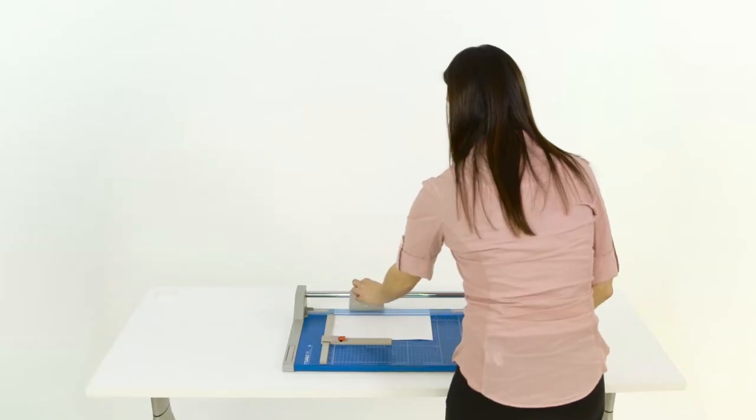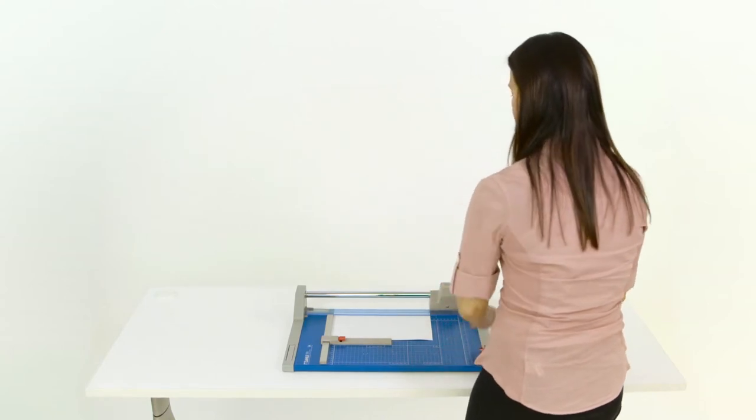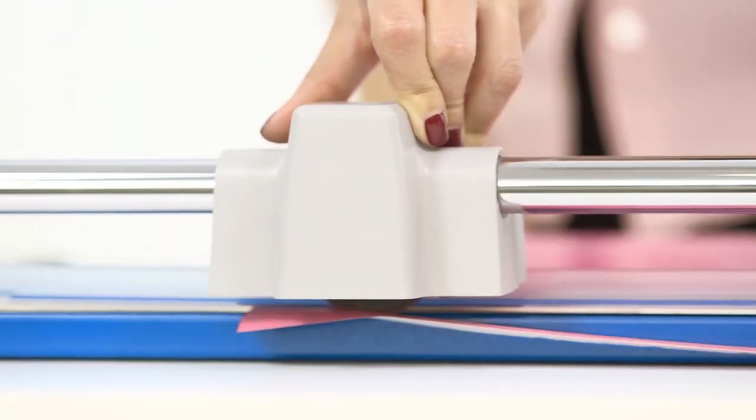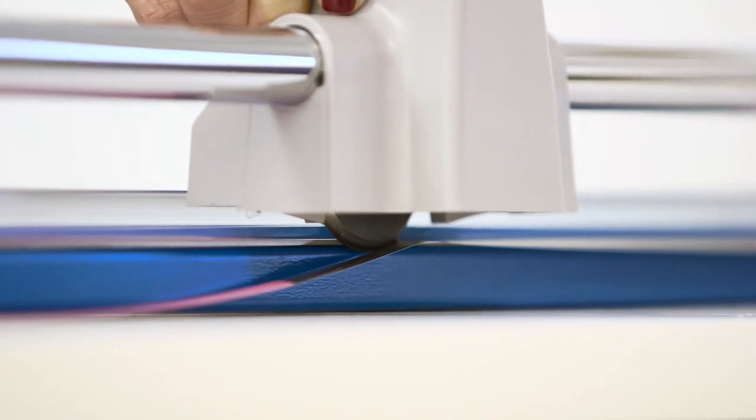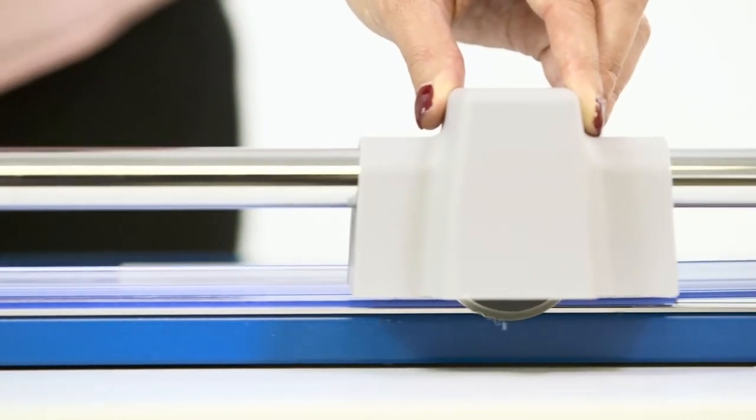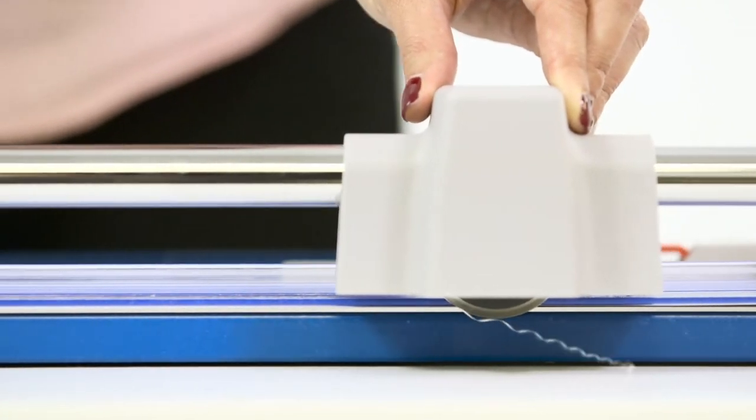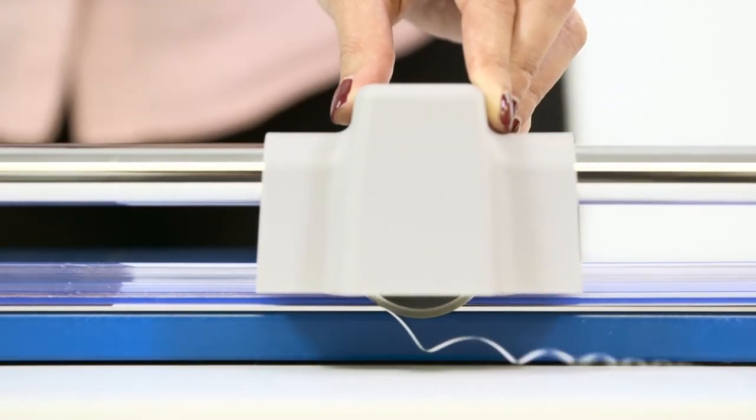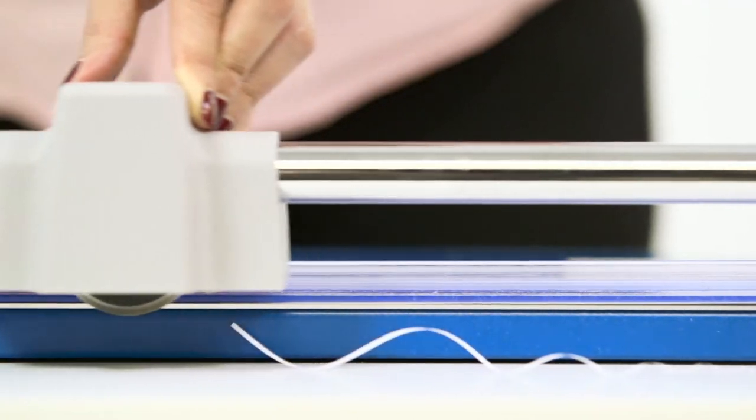Don't worry about constantly replacing dull or worn blades. This trimmer sharpens as you cut to maintain a perfectly honed edge. The blade's precision graduated edge will remove even the tiniest sliver of paper and produce a clean, burr-free cut each and every time.